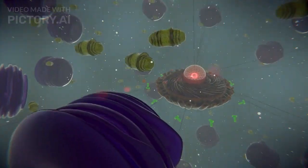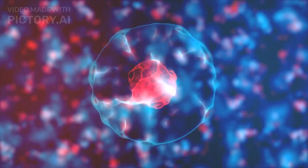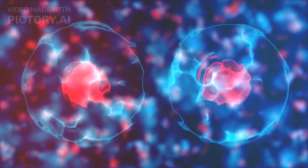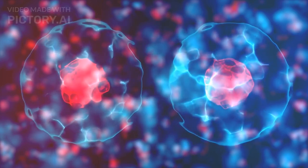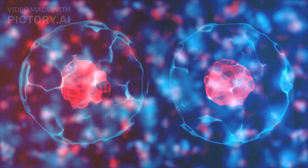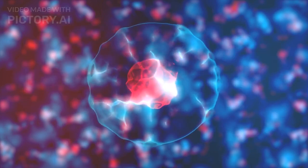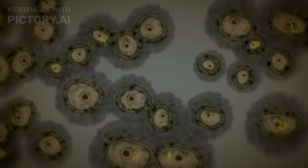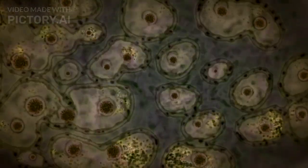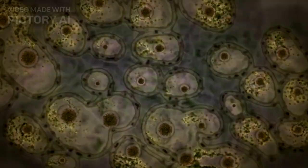Suspended within the cytoplasm is the cytoskeleton, a network of fibers that provides structure and facilitates movement. It's like the cell's scaffolding, ensuring it maintains its shape and allowing organelles to move within the cell. The movement of an organelle traveling along a microtubule showcases the dynamic nature of the cytoskeleton.